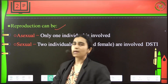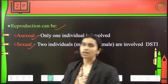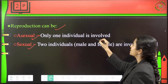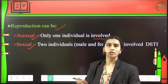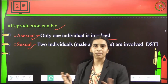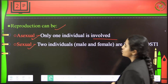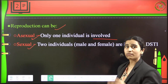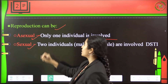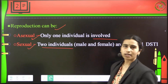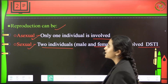Reproduction can be of two types: asexual and sexual. Asexual reproduction involves only one individual — no fusion, no gametes required, no copulation is required. Only one individual is involved and it can give reproduction by itself. Whereas sexual reproduction involves the copulation of two individuals — male and female.